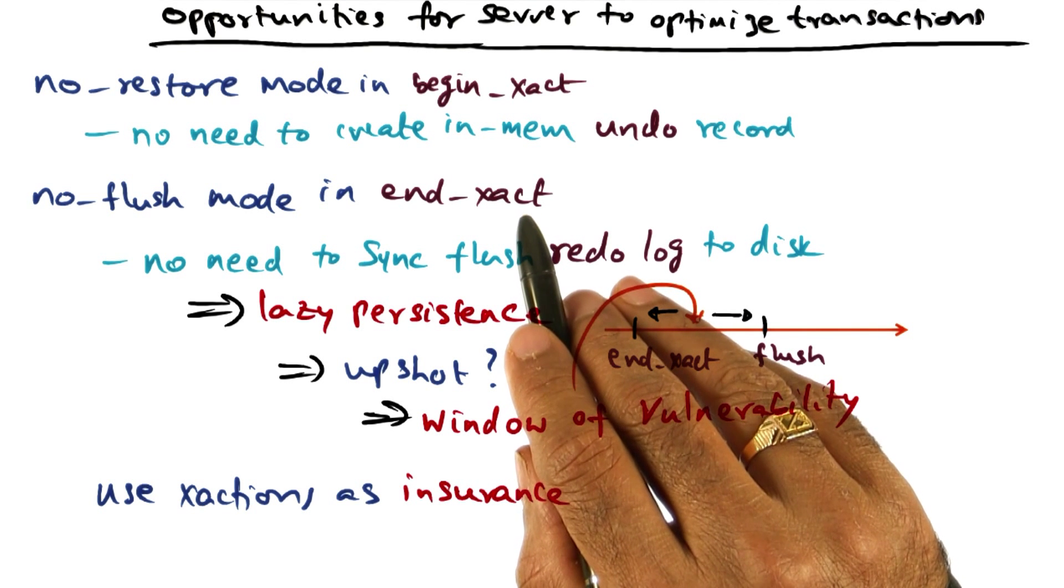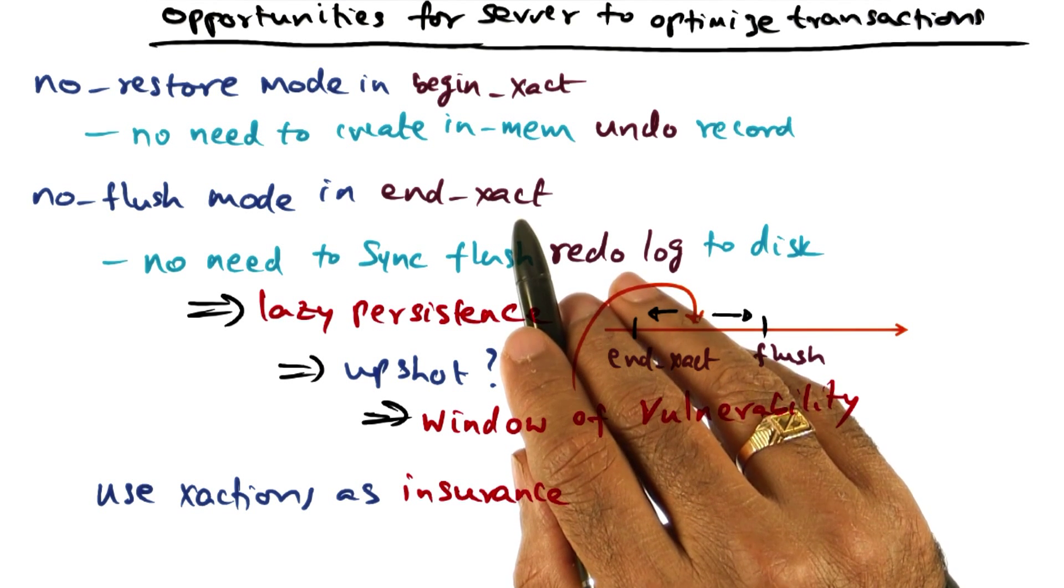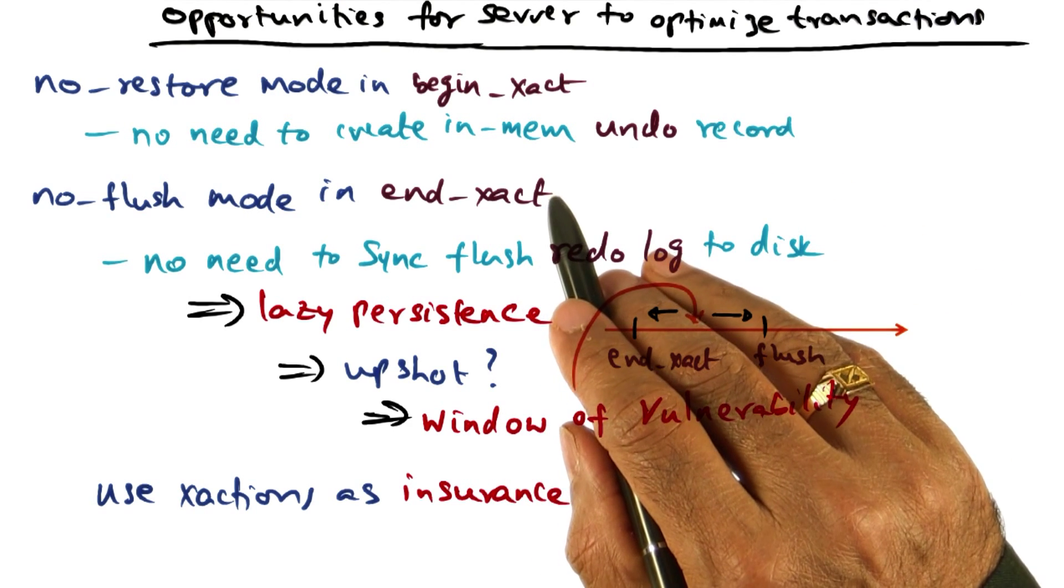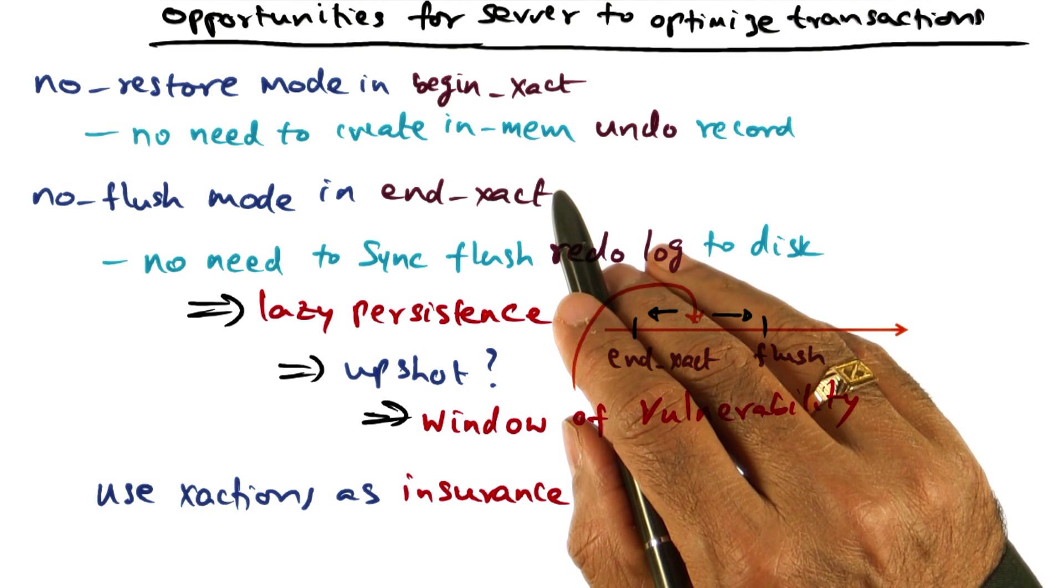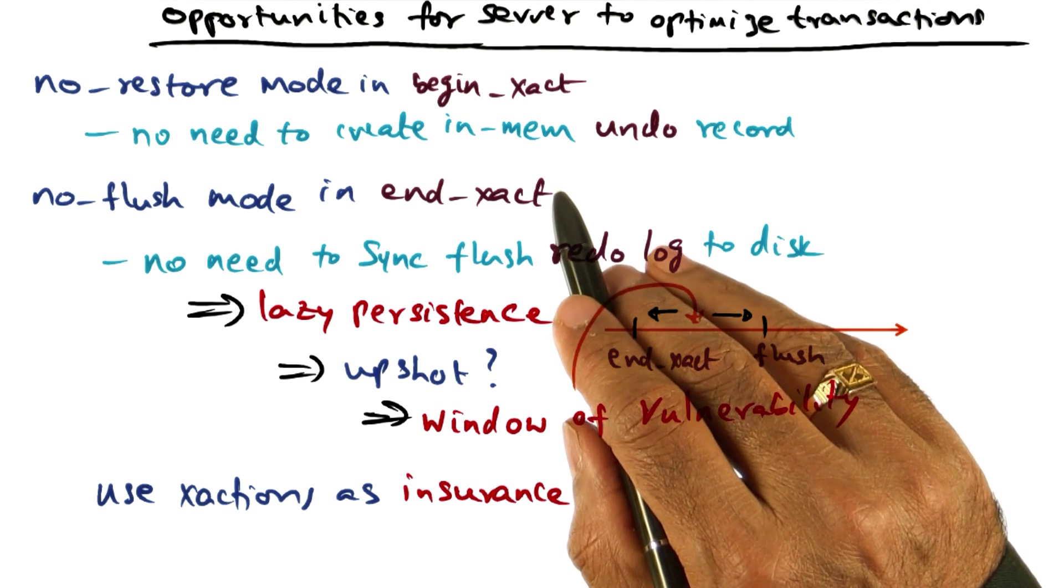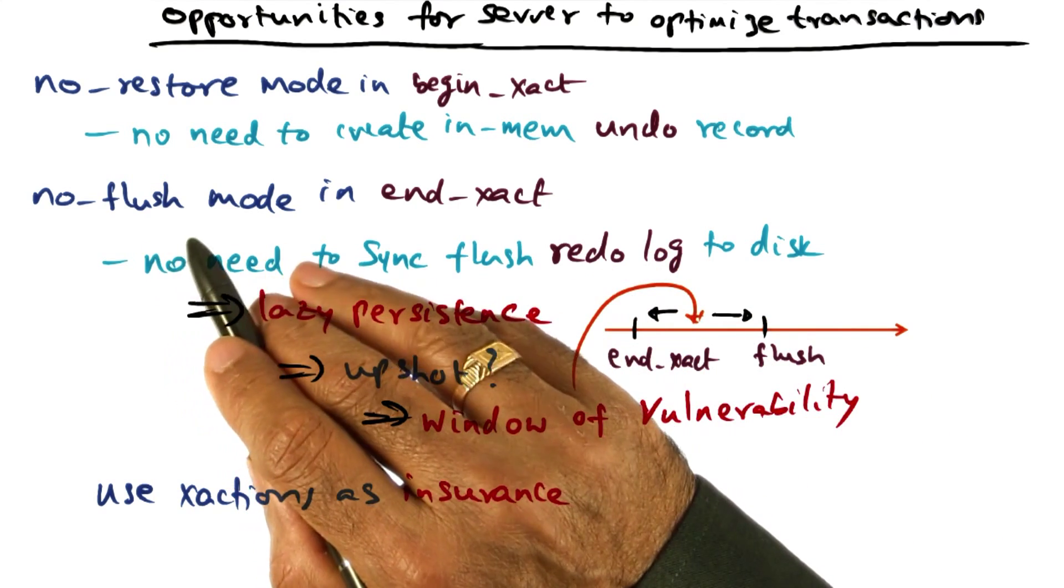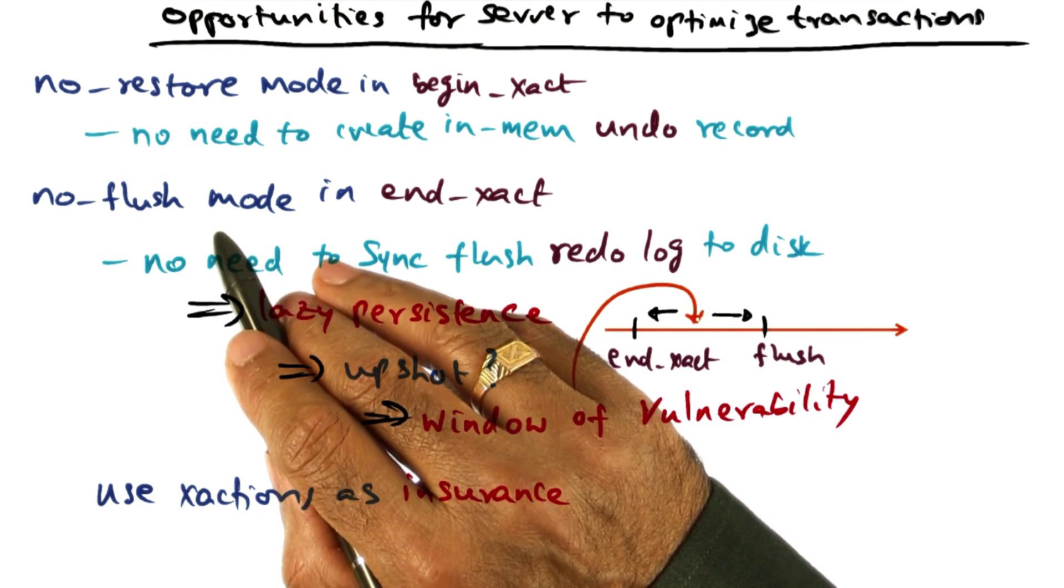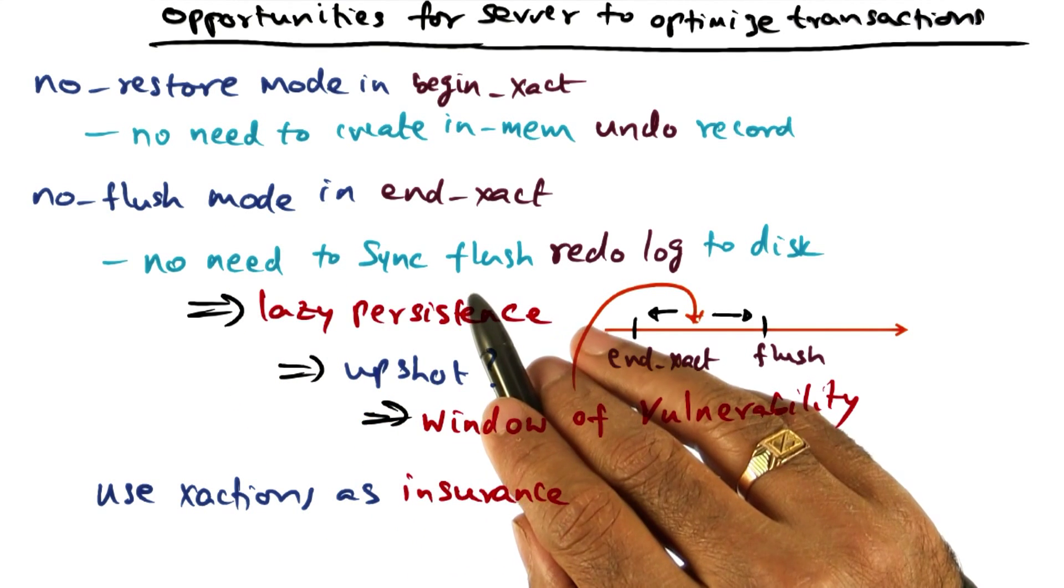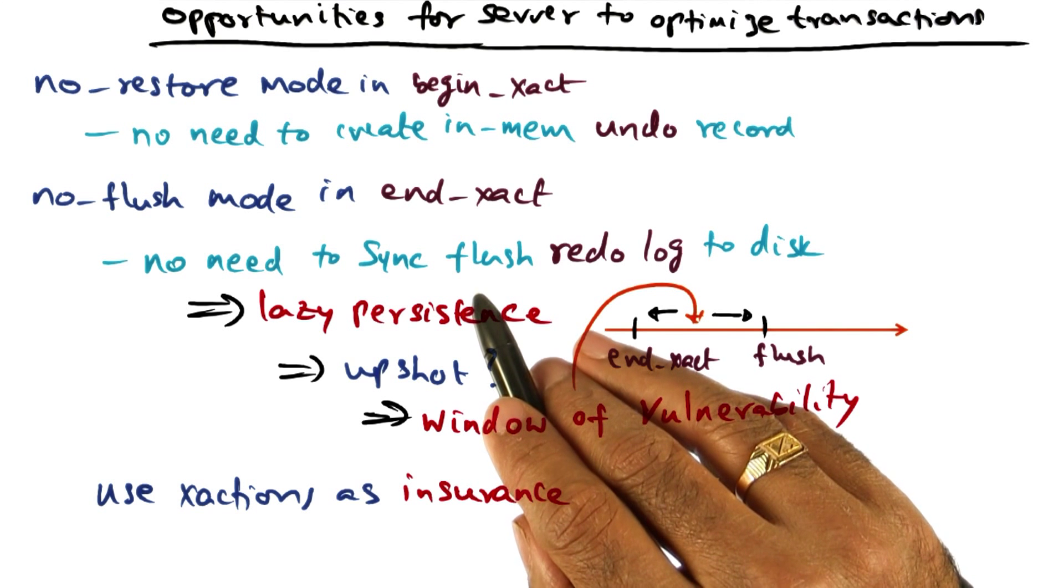But if the application developer is opportunistic and believes that the chances of failure, either due to power failure or due to his own software crashing is pretty small, he could be brave enough to say no flush mode. And what that no flush mode is telling the RVM library is that there is no need to do a synchronous IO.